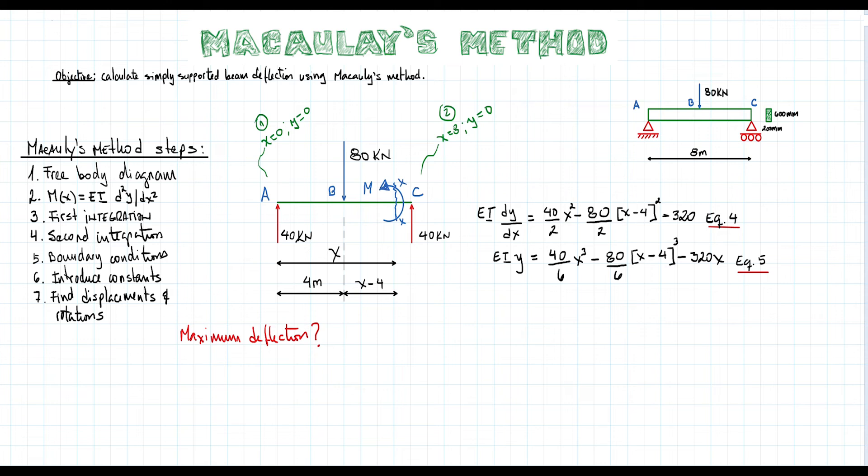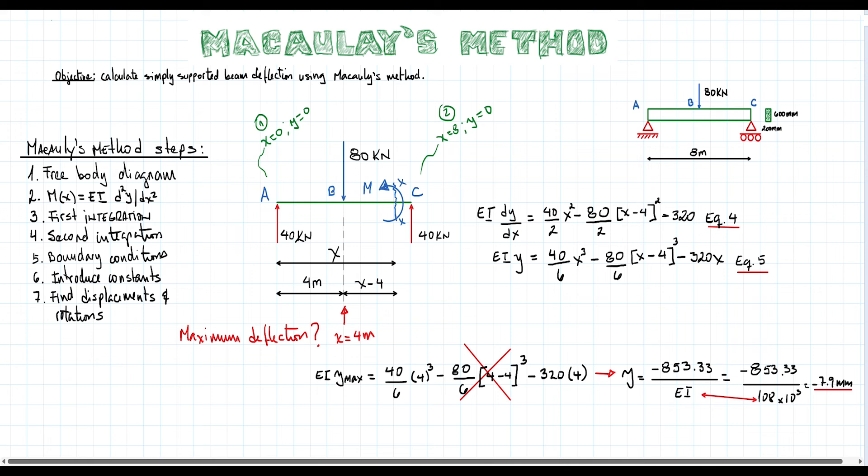To answer this question, we need to leverage the simplicity of this example. We know that the maximum deflection will be at the center of the beam, or expressed in x-coordinate, maximum deflection or displacement will be at x equals 4 meters. Using equation 5 and x equals 4, we get that the maximum deflection will be minus 7.9 millimeters. It is negative because it is downwards as expected.